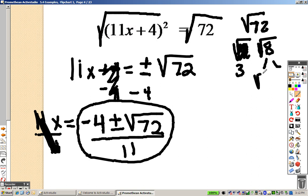8 into root 4 and root 2, and root 4 simplifies to 2. So 3 times 2 is 6 root 2, so really our answer is negative 4 plus or minus 6 root 2 over 11.